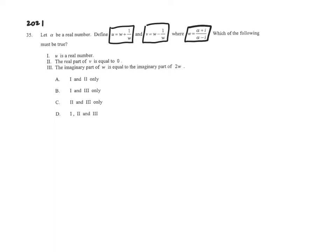Where w is a fraction, w and 1 over w is basically the w fraction being flipped. Therefore, u is alpha plus i over alpha minus i, adding the alpha minus i over alpha plus i.